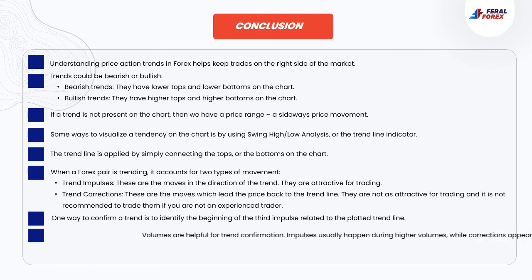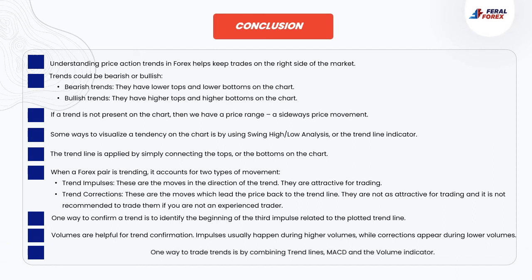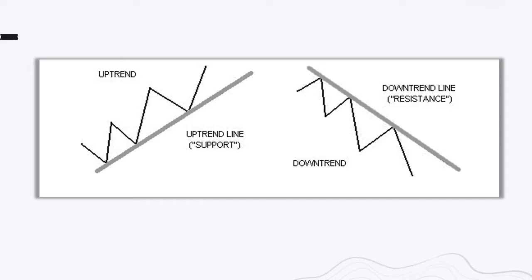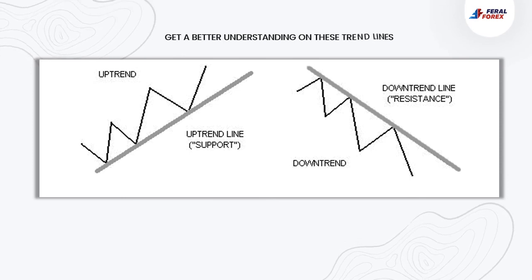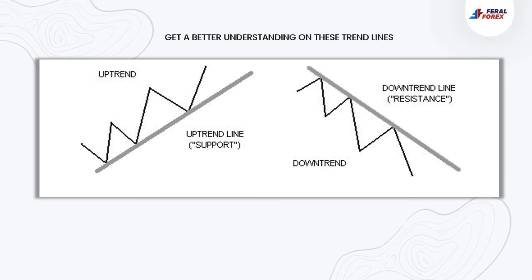Volumes are helpful for trend confirmation. Impulses usually happen during higher volumes, while corrections appear during lower volumes. One way to trade trends is by combining trend lines, MACD, and the volume indicator. Check some images to get a better understanding of these trend lines.